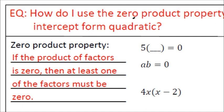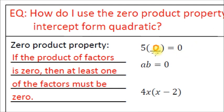Our example: if I asked you five times what gives you zero, you would all say zero. Five times zero equals zero. Five times anything else gives you something else. So the zero product property says: if you want this equation equal to zero, you know that somewhere along the line you're going to have to multiply the whole thing by zero.